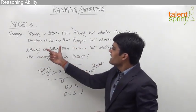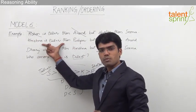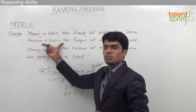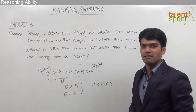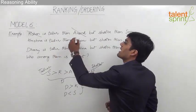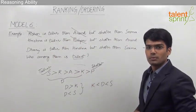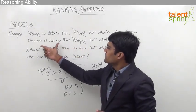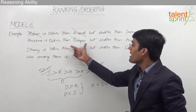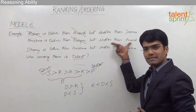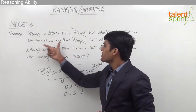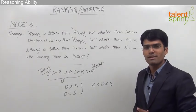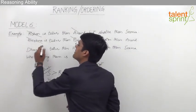From the next statement, Krishna is taller than Pushpa. When Krishna is taller than Pushpa, Pushpa is shorter than Krishna, so Pushpa cannot be the tallest person. Similarly, Krishna is taller than Pushpa but shorter than Anand, meaning Krishna is shorter than Anand. When Krishna is shorter than Anand, Krishna cannot be the tallest person. So Krishna is also eliminated.